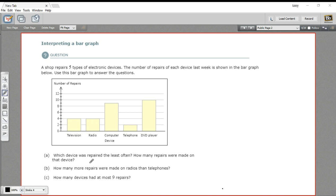So A says, which device was repaired least often? We just talked about that. That's the telephone, only twice in a week. And how many repairs were made? Well, that would be two. To get that number, we just look at the top of the bar and see what line it's touching, and then go over to the y-axis here and find the two.